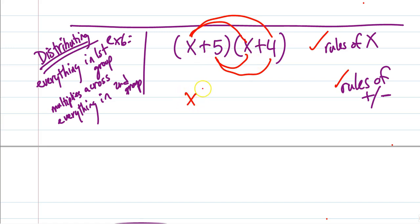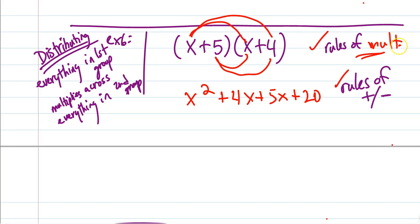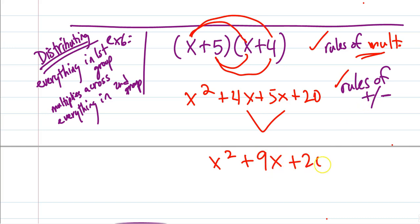Starting with x times x, which is x squared; x times 4 is 4x; then 5 times x is 5x; and 5 times 4 is 20. Notice we applied the rules of multiplying — don't make 5 and 4 into a 9, that's nonsense; we were multiplying there. We multiply everything in the first group across everything in the second, then look for like terms. Those two middle terms are like terms, so 4 and 5 add to make 9x, giving us x squared + 9x + 20. We cannot combine x squared and 9x — they are not like terms.